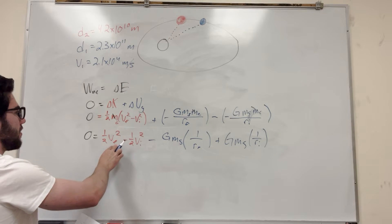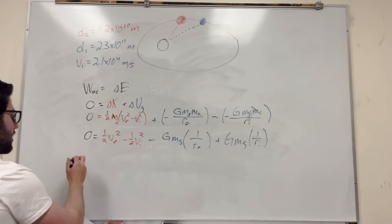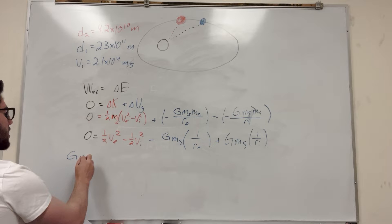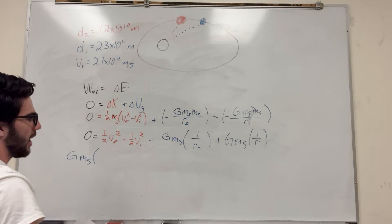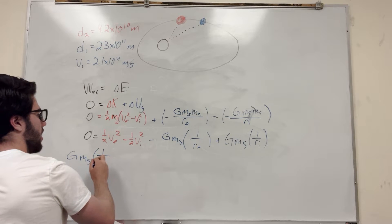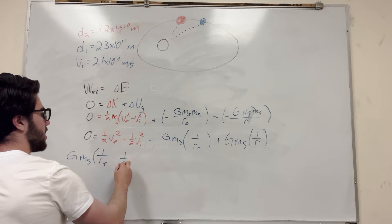So I'm going to move everything except velocity final over because that's what we're trying to find. So let's do that. So it's going to be, we're going to add this over. So it's going to be gravity times mass of the sun. Now what I'm going to do is I'm just going to group these two together. I'm going to put, it's going to be one over radius final minus one over radius initial, right?